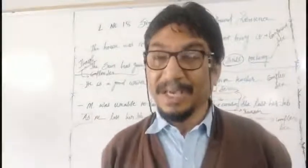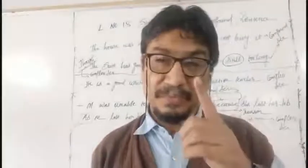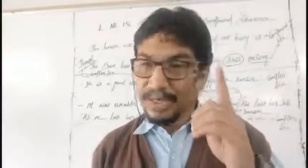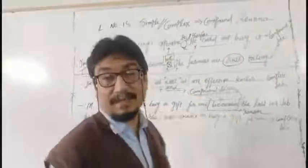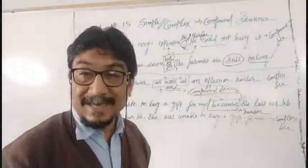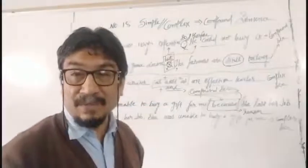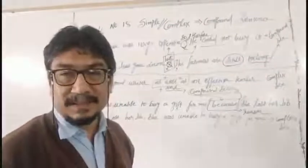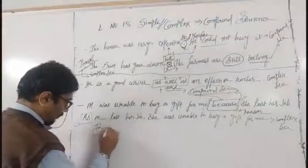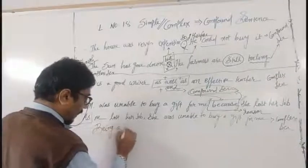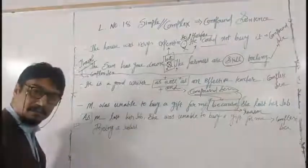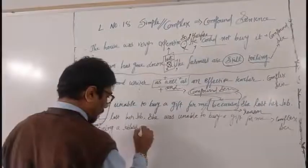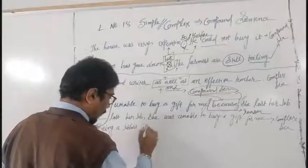What shall I do? I have to use only and only one subject and only and only one verb. This is the basic fundamental characteristic identity of a simple sentence. Being a jobless fellow...